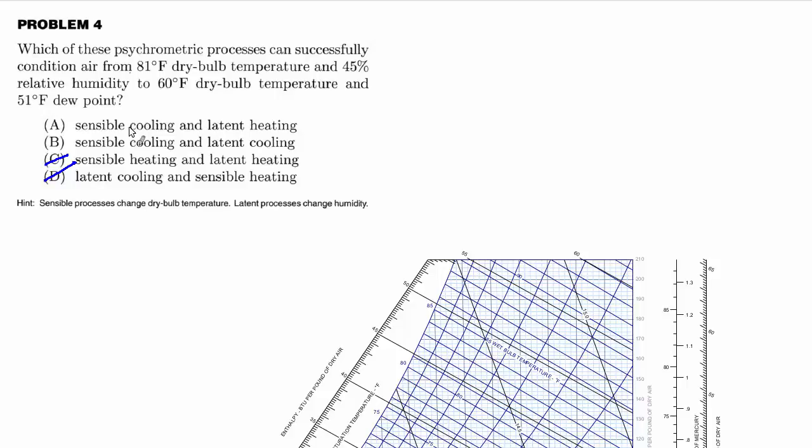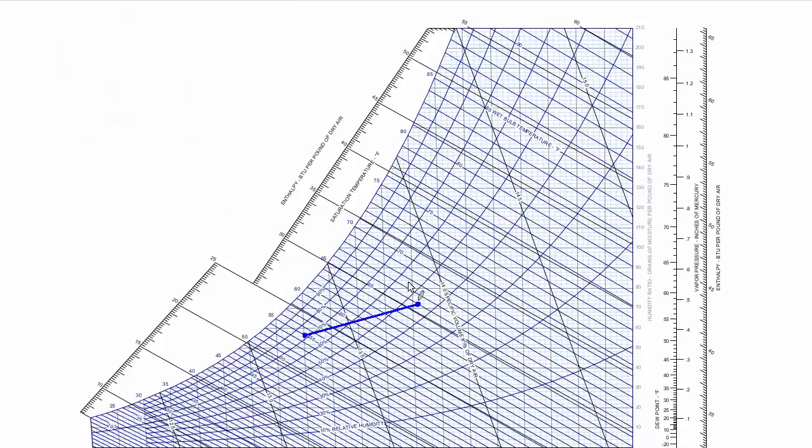So the question is, is it sensible cooling with latent heating or sensible cooling with latent cooling? And this can be a little confusing because on the one hand, the relative humidity is higher in the second state than in the first. In the first state, it's about 45%, and in the second state, it's over 70% relative humidity. So you could make the argument that the humidity is increasing, and that's true when you think about relative humidity.